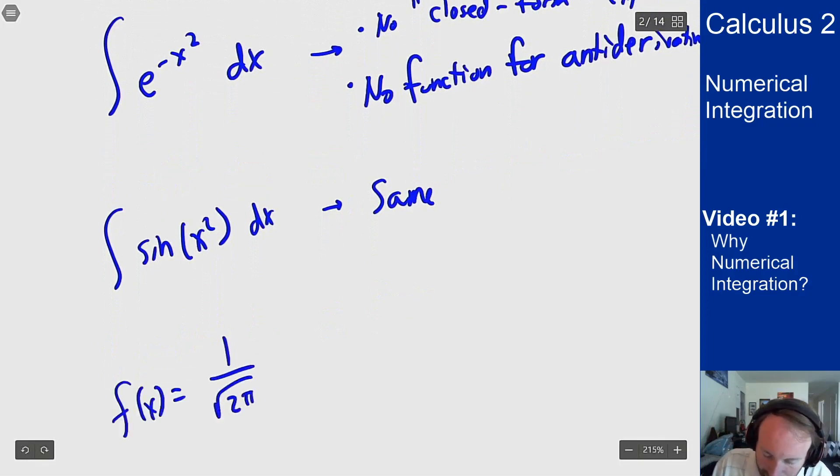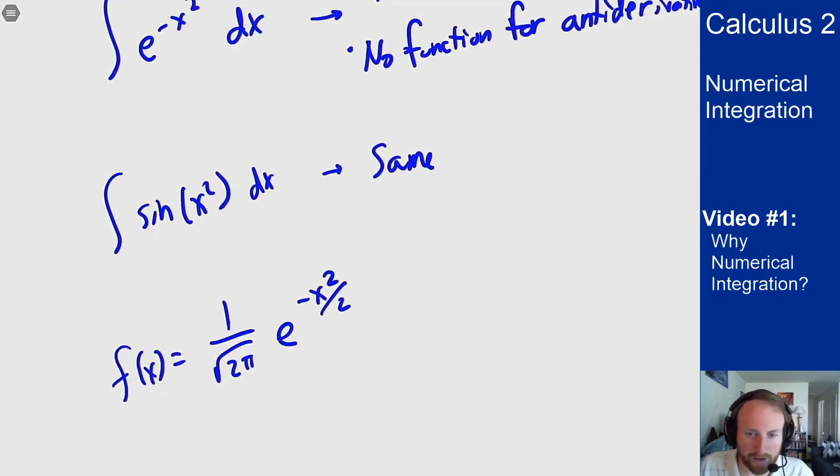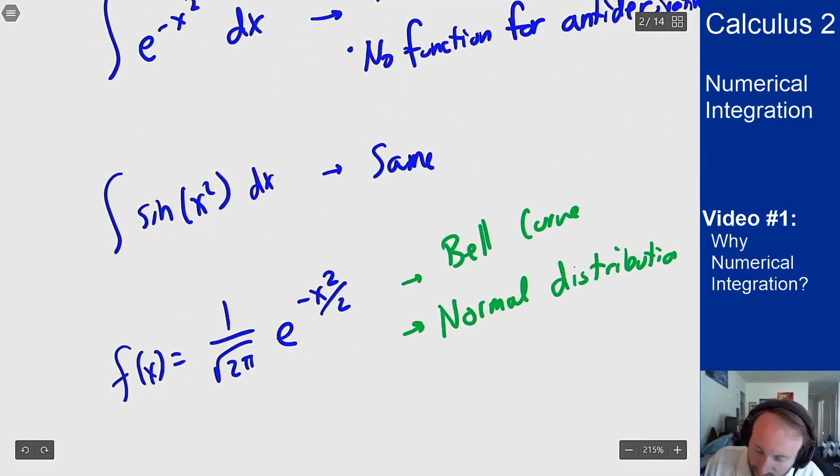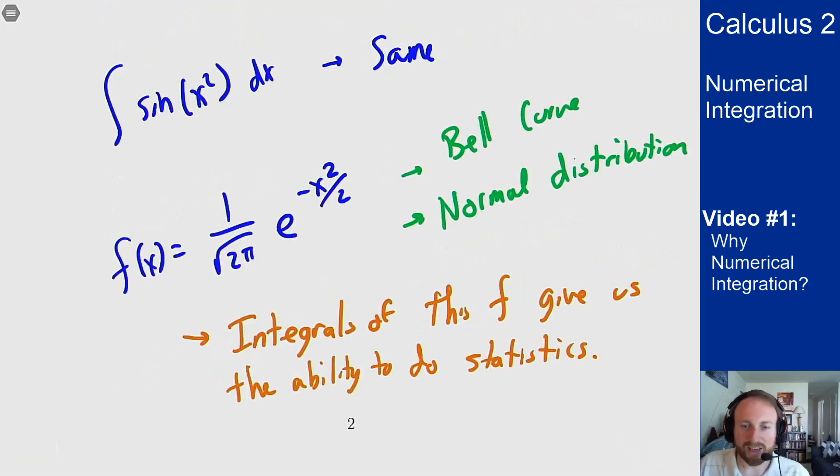If I write 1 over root 2 pi e to the minus x squared over 2, that there is the bell curve of the normal distribution. And integrals of this function are super important in statistics. It's how you write z tables. It's how you do all these probability or statistical tests are based on integrals of this function. But since we don't have a formula for it, there's no closed form, we have to use numerical integration to figure out what these integrals are. So this is why we need numerical integration to solve all these problems because we need these values and there's no way to get them analytically.